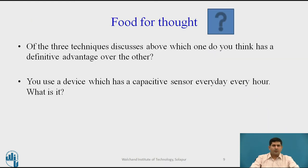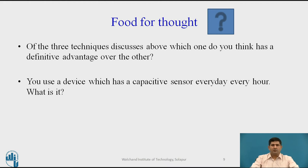Some food for thought: of all three techniques discussed, which one has a definitive advantage over the others? You use a device with a capacitive sensor every day — that is the cell phone. So what is the principle actually being used there?